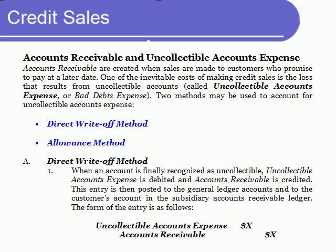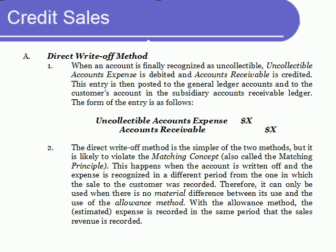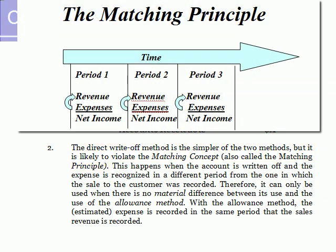Direct write-off is the simplest. When the company realizes that one of its accounts will never be collected, it writes off the account by crediting accounts receivable. It then debits an expense account called uncollectible accounts expense, or sometimes bad debts expense. The direct write-off method is very straightforward, but there's a problem with it: it violates the matching principle. The matching principle tells us that in order to accurately determine the net income for a period, the expenses incurred in that period should be reported on the same period's income statement so that expenses are matched up with the revenues they help produce. When expenses and revenues are mismatched between accounting periods, the result will be a distorted net income figure.